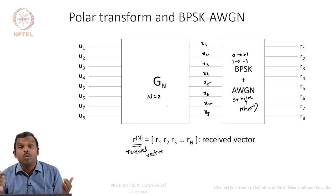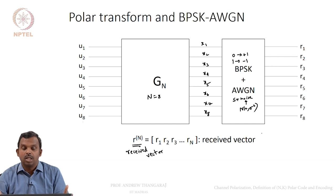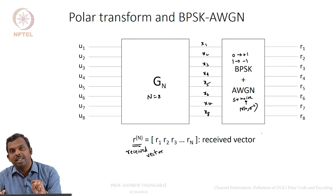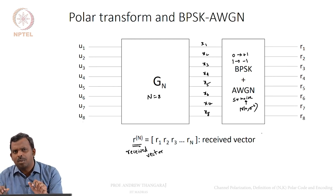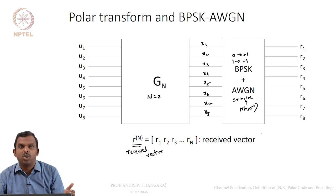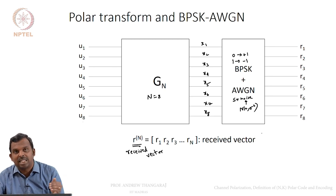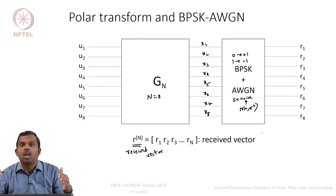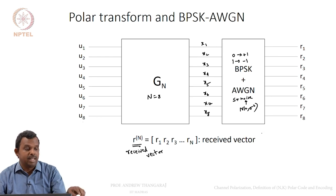It is just an invertible transform, but why would you use it? What is the point of using the polar transform before a channel? It turns out if you do not use the polar transform, every bit goes through the same channel. The polar transform combines these bits and changes the channel in some way. This notion of looking at individual bit channels after the polar transform is the key innovation in polar codes, and those channels vary a lot in terms of quality.